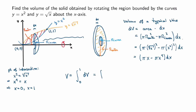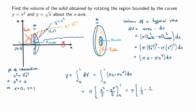Substituting the expression for dv, I integrate π·x minus π·x⁴ dx from 0 to 1. Evaluating gives π times [x²/2 minus x⁵/5] from 0 to 1, which equals π times (1/2 minus 1/5). Putting everything on a common denominator: 5/10 minus 2/10 gives 3π over 10 — exactly the answer WolframAlpha gave us.